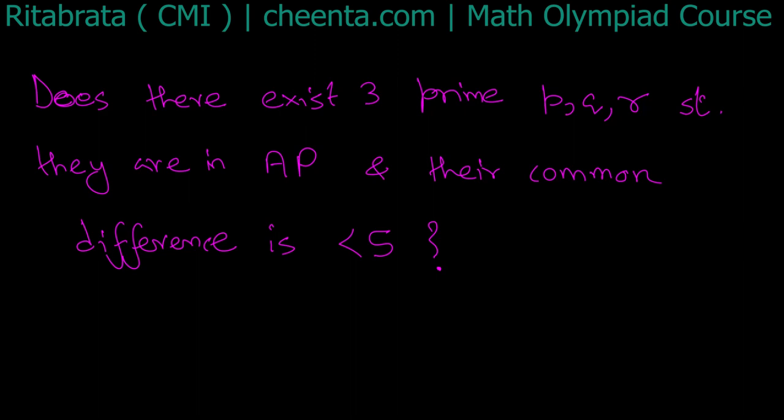So you are asked to find whether there exists 3 primes such that they are in AP and their common difference is less than 5 or not. If it is not possible, you have to prove that. And if it is possible, you have to find such examples. So try that on your own, and if you have found the solution, you can type that in the comment box. And if you are interested in problems involving prime numbers, keep scrolling through this channel. There are a lot of contents involving that. Thank you.